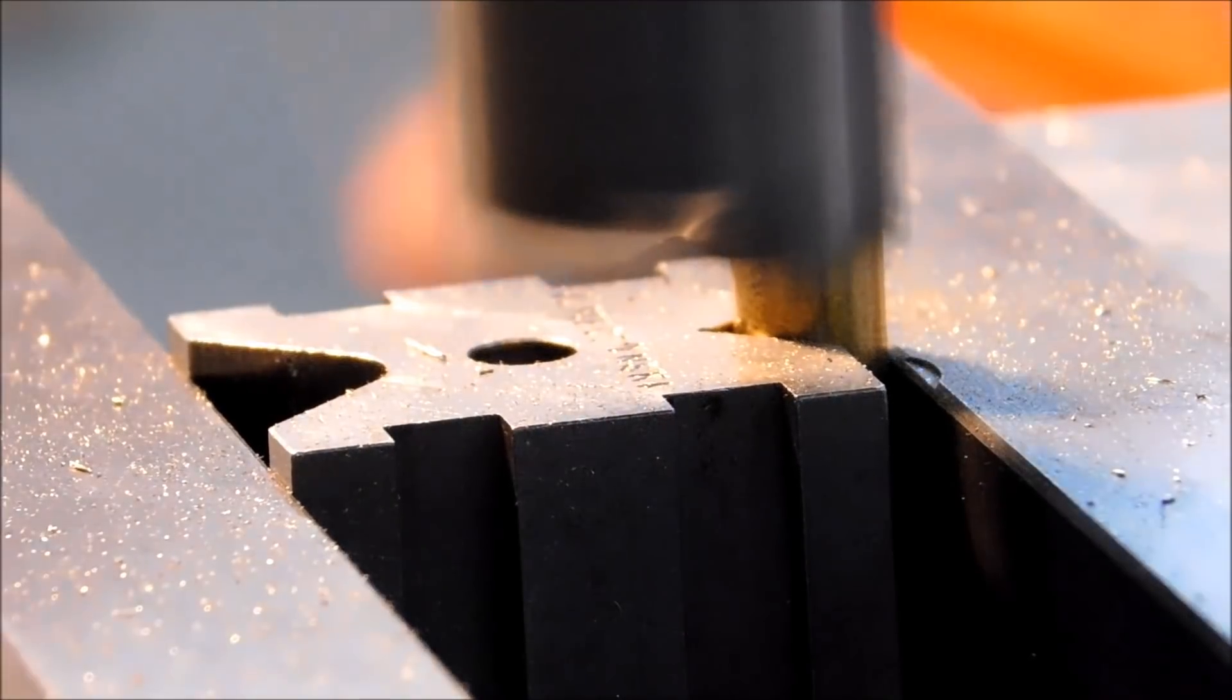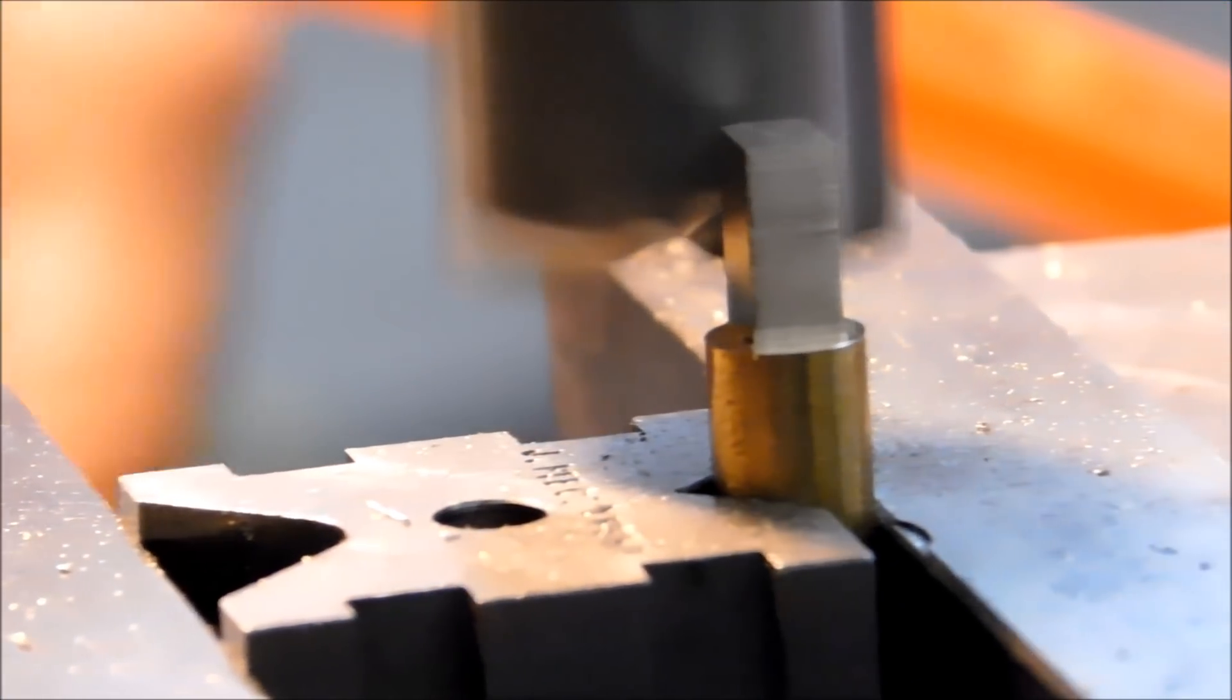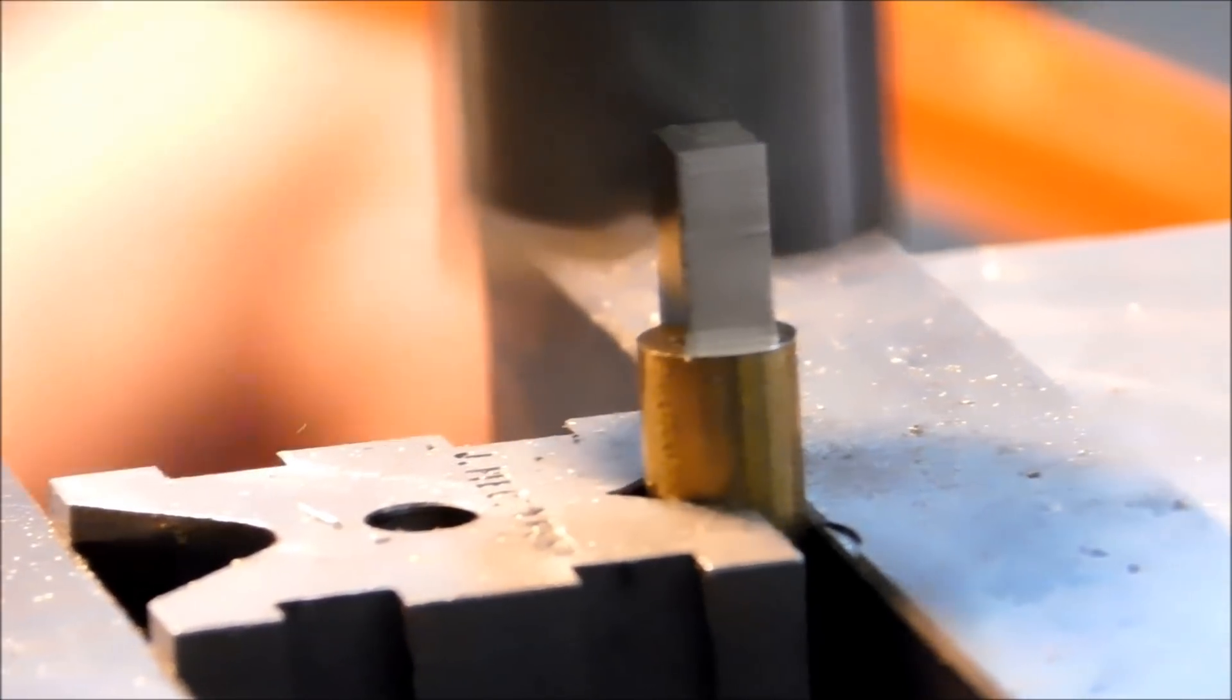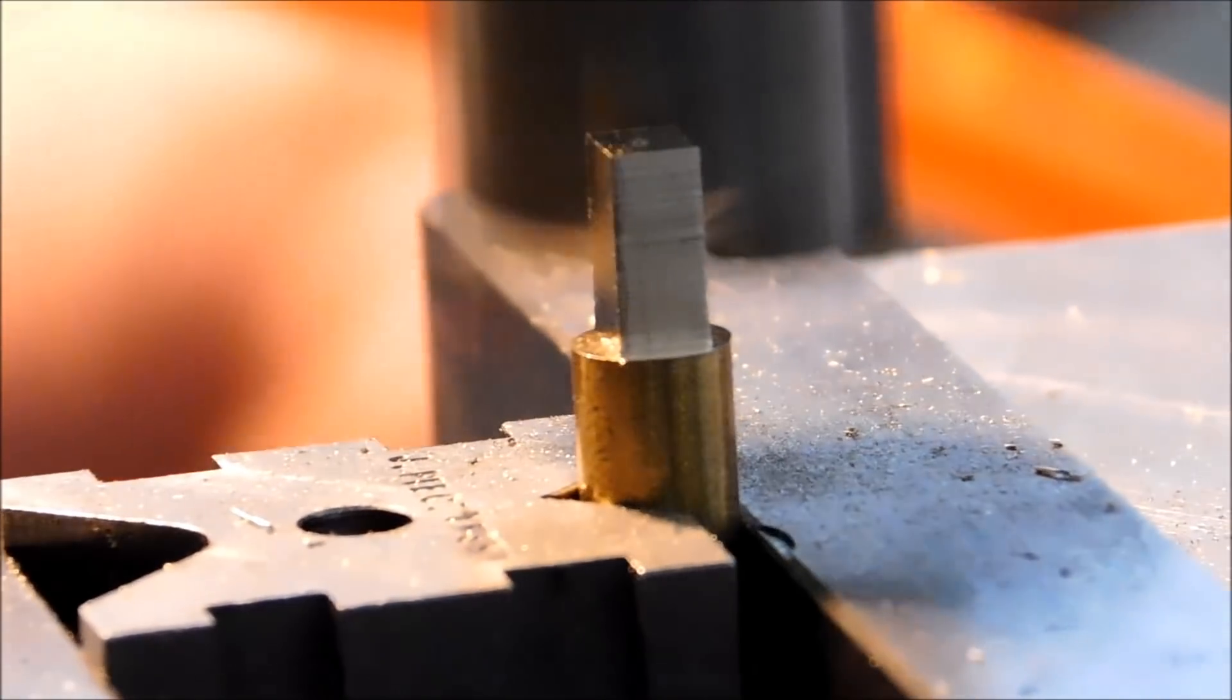Now if the part is asymmetrical, you're going to have to record these dimensions. Use a sharpie marker and write directly on top of your vise. Draw a little picture right on your vise. You don't have to mess around with paper. An alcohol swab takes it right off when you're done.